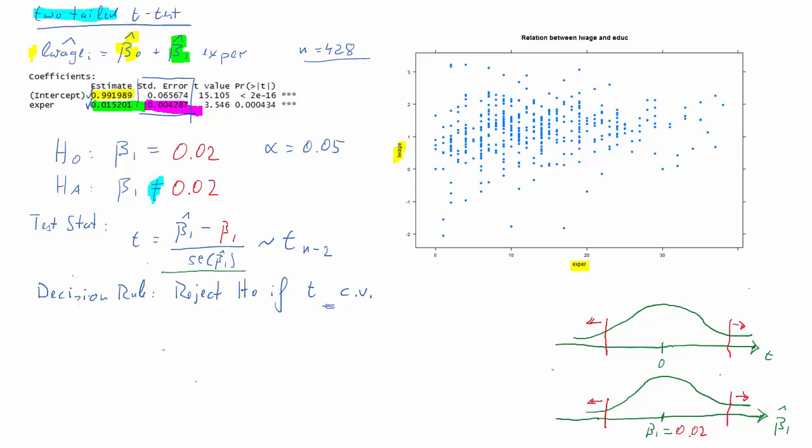Now the t test is basically a standardized version of beta 1 hat and it standardizes it to be centered around 0. But otherwise the picture will look exactly the same. We will want to reject our null hypothesis if now our t test statistic is in the tail of that distribution for the t test. Okay, but it means like getting extreme values for beta 1 hat relative to our hypothesis.